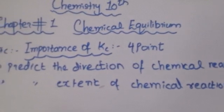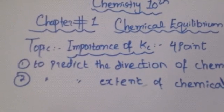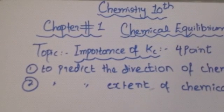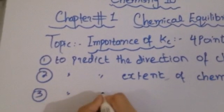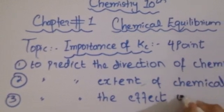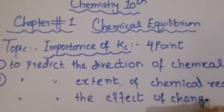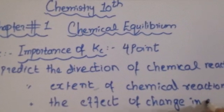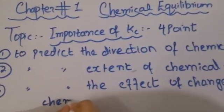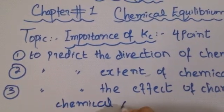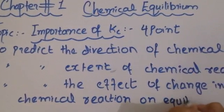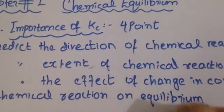The third point is to predict the effect of changing conditions on a chemical reaction at equilibrium state. You have to remember that the reaction will be in equilibrium state, and then we will predict these things on the equilibrium state.